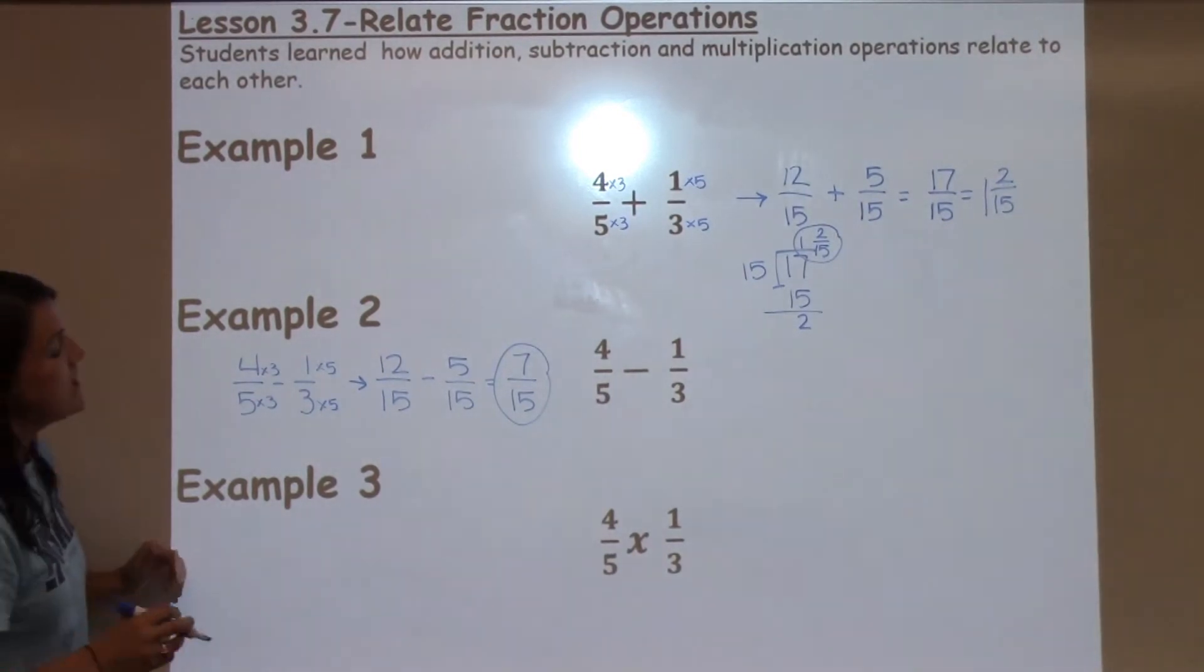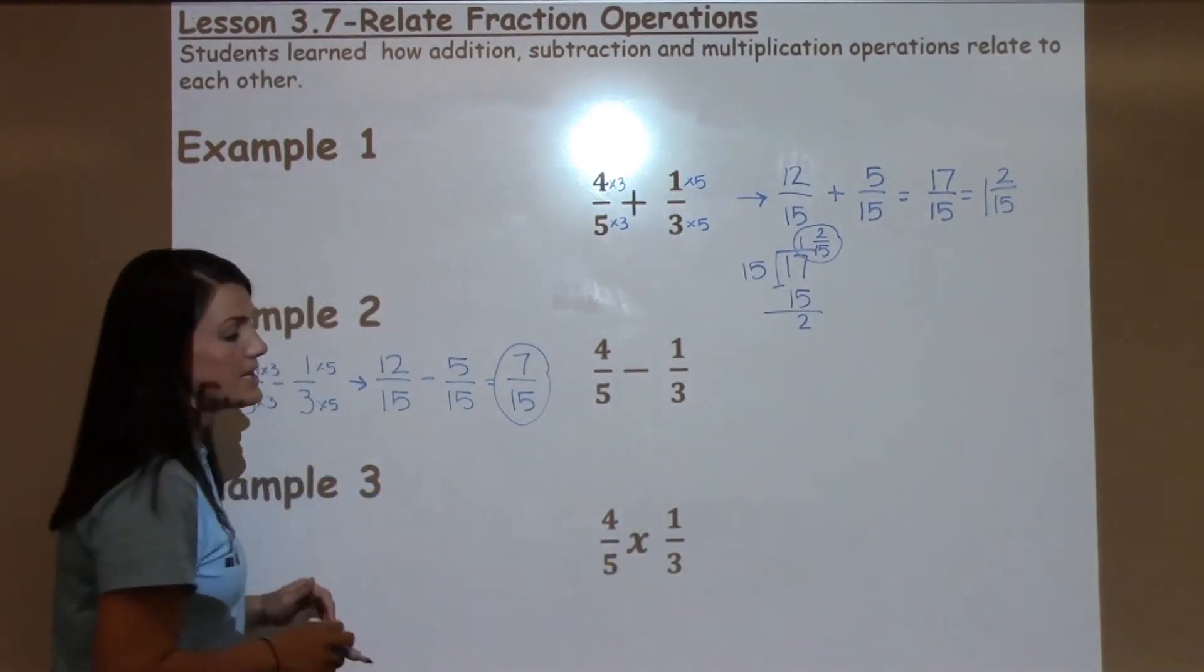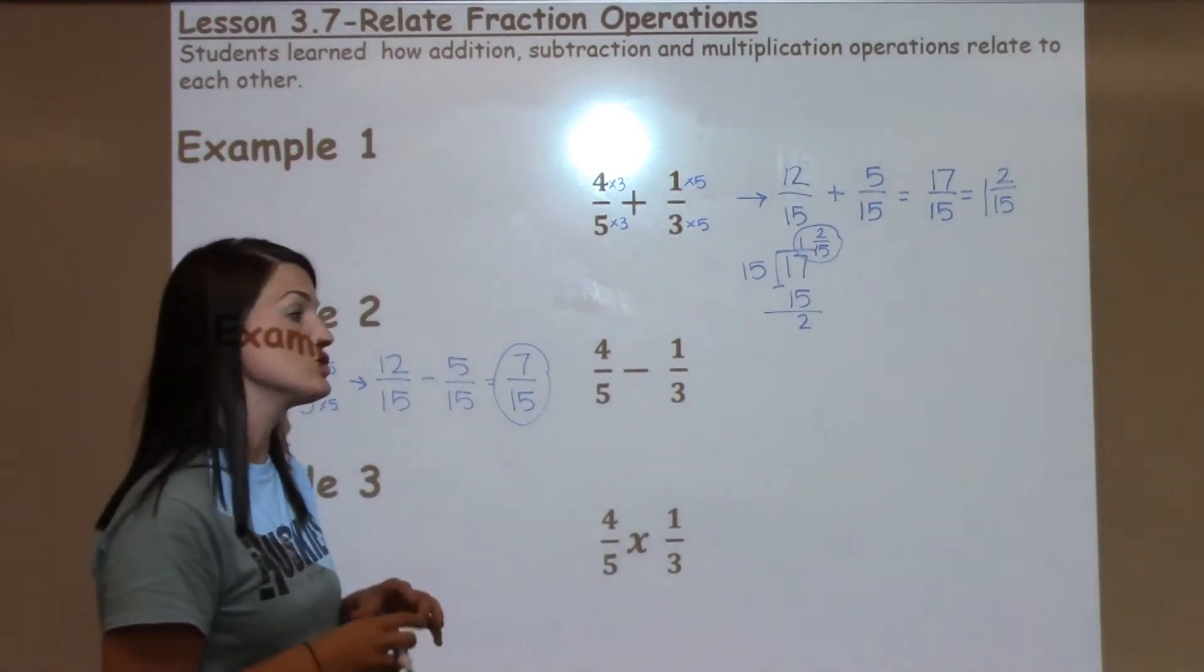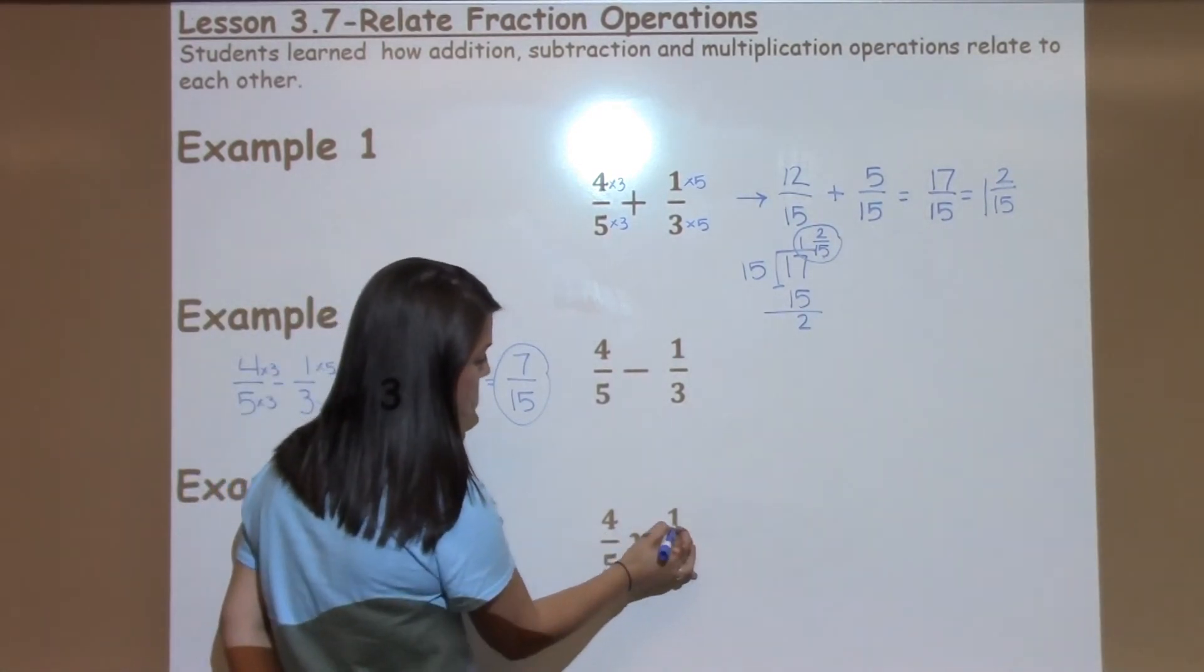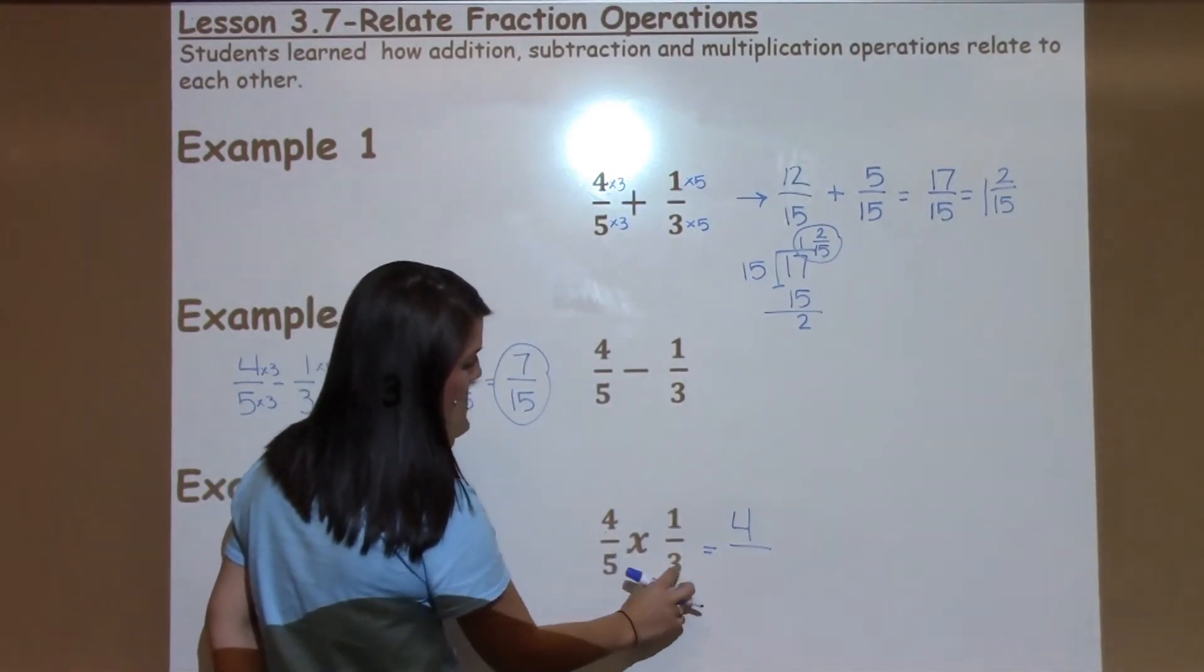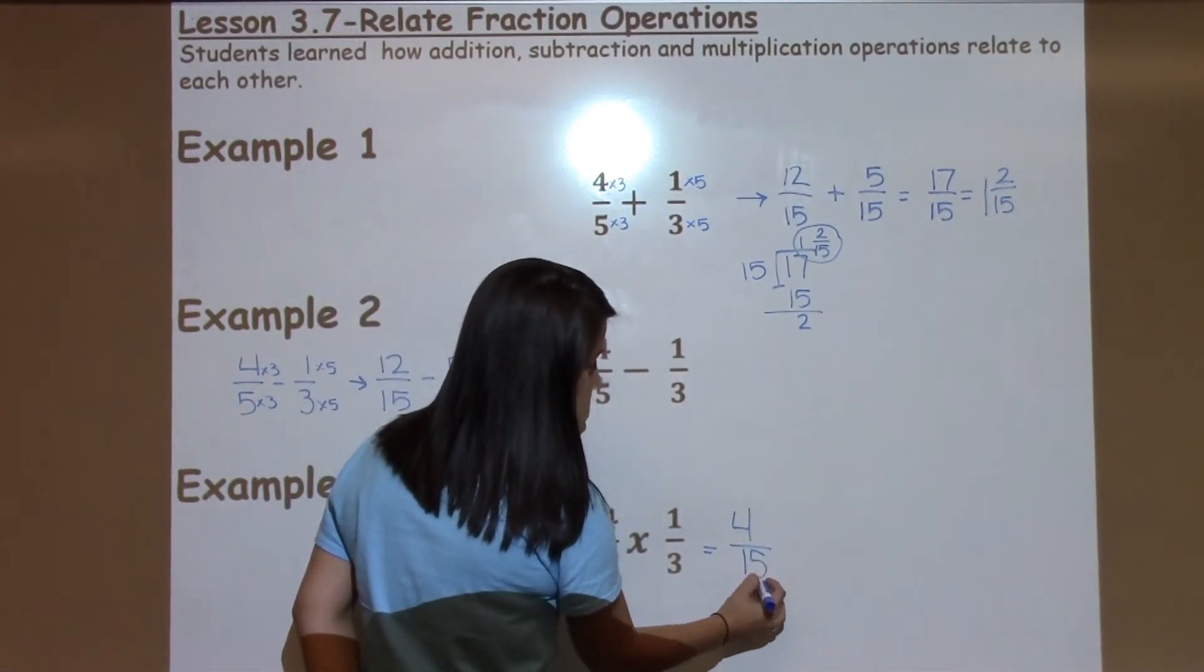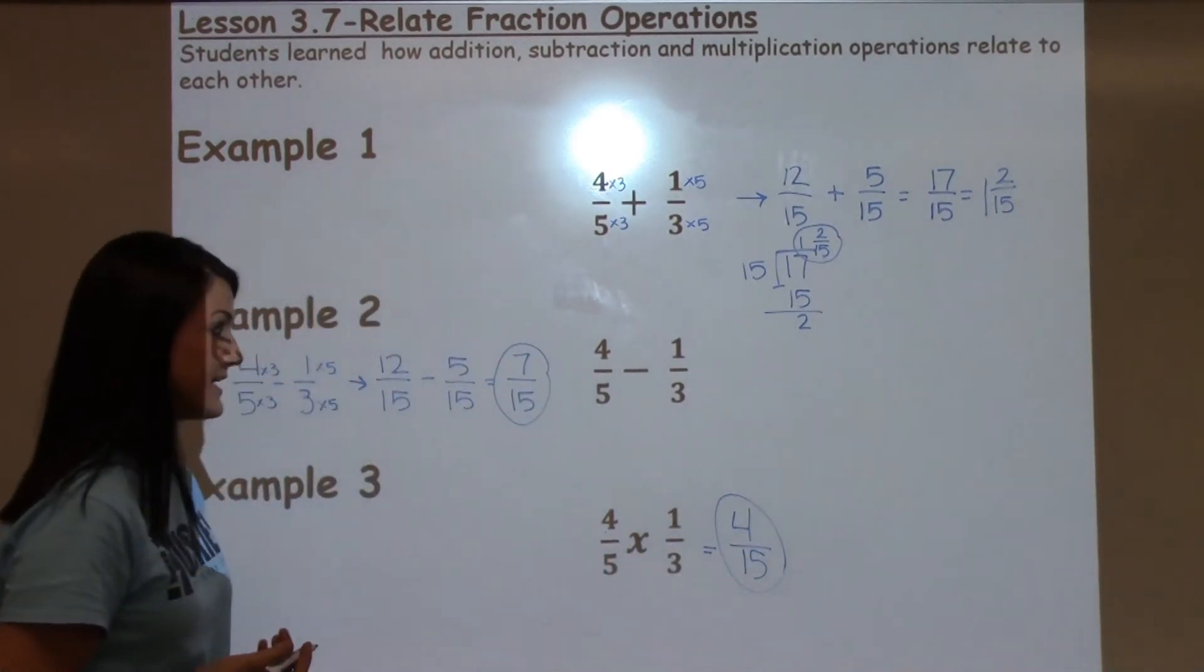Alright, for multiplication, we have 4 5ths times 1 3rd this time. The nice thing about multiplying fractions is you do not have to make the denominators the same. You just get to times top times top. So 4 times 1 is 4. Bottom times bottom, 5 times 3 is 15. So my answer for this problem is 4 15ths.